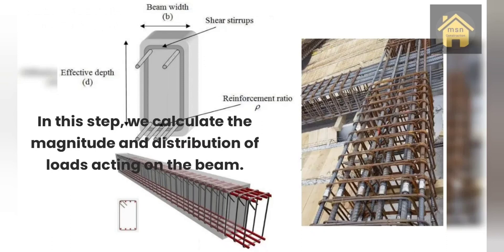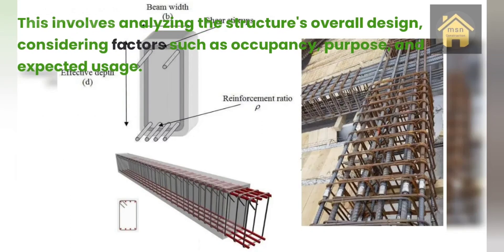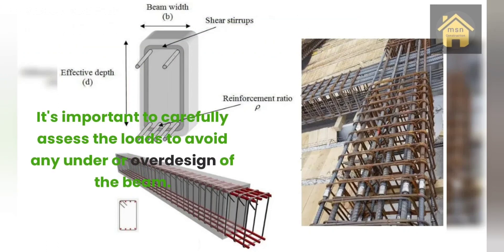Step 2 — Load calculations. In this step, we calculate the magnitude and distribution of loads acting on the beam. This involves analyzing the structure's overall design, considering factors such as occupancy purpose and expected usage. It's important to carefully assess the loads to avoid any under or over design of the beam.